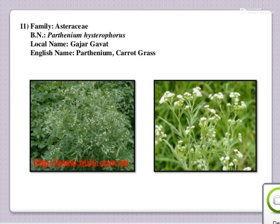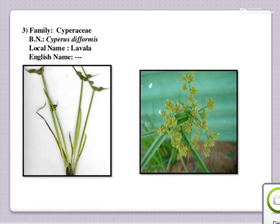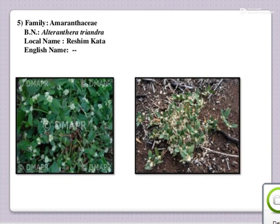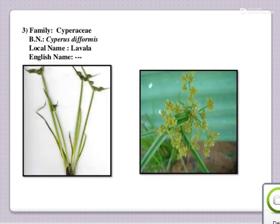The next one is Labad; botanical name is Cyperus — nutsedge, Cyperus family. This is also a noxious weed; eradication is very difficult. Propagation of this weed is through rhizomes.